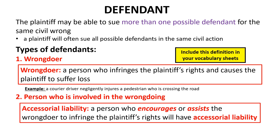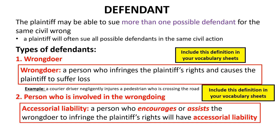The second type of defendant is any person who is involved in the wrongdoing. A person who encourages or assists a wrongdoer to infringe the plaintiff's rights will have accessorial liability — that is, they will be liable to the plaintiff for encouraging or assisting the wrongdoer. Find the term 'accessorial liability' in your vocabulary sheets and write this definition in there, then highlight the words in red bold italicized type. If required to define accessorial liability, make sure you include those highlighted words.